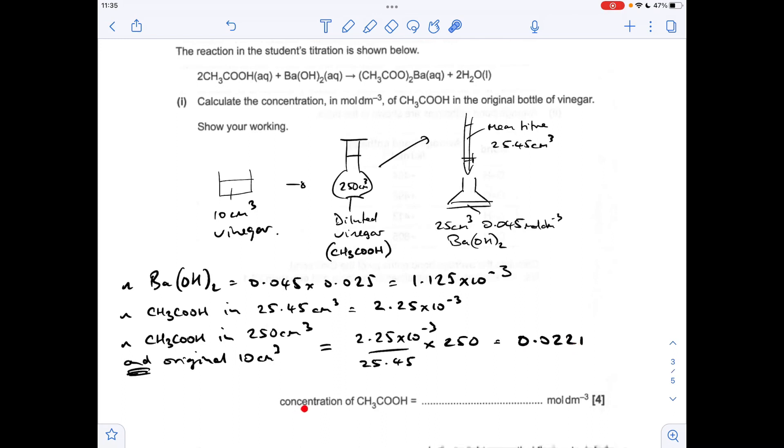Last thing we've got to do is work out the concentration of the ethanoic acid. So that's just moles over volume. So 0.0221 divided by 0.01, 10 cm cubed in decimetres cubed is that. That's coming out at 2.21 moles per decimetre cubed.